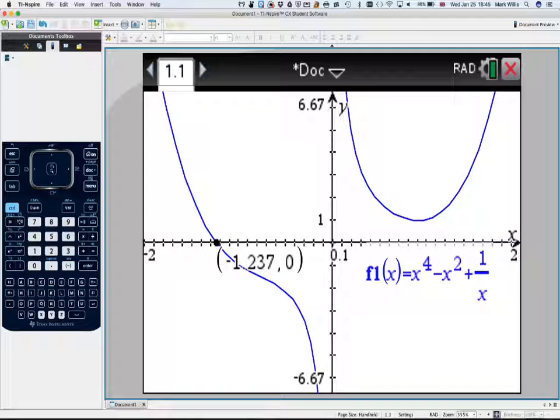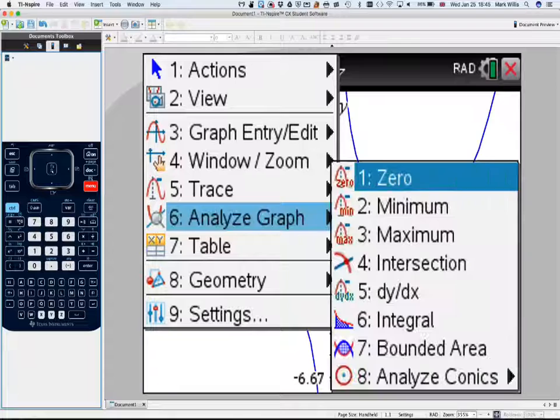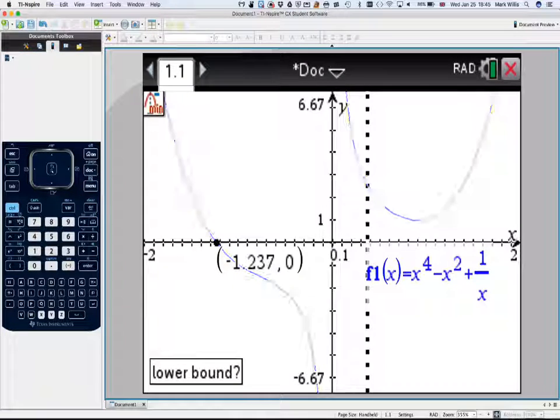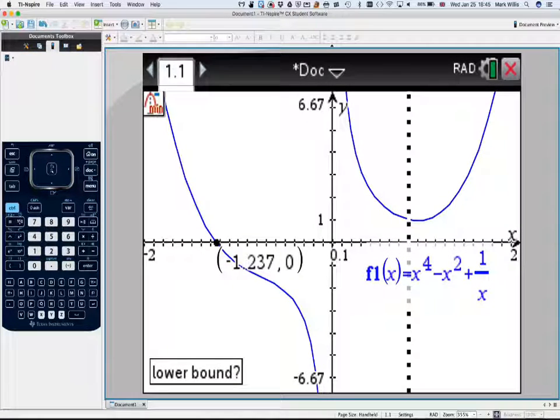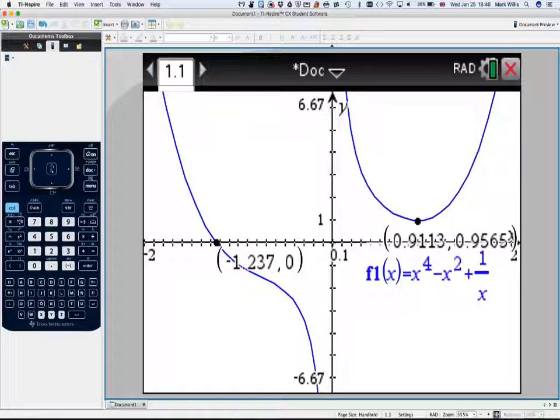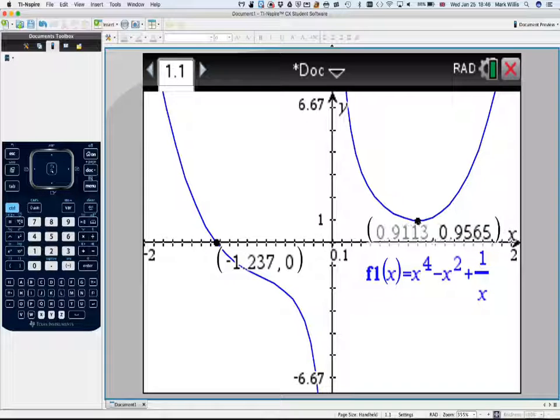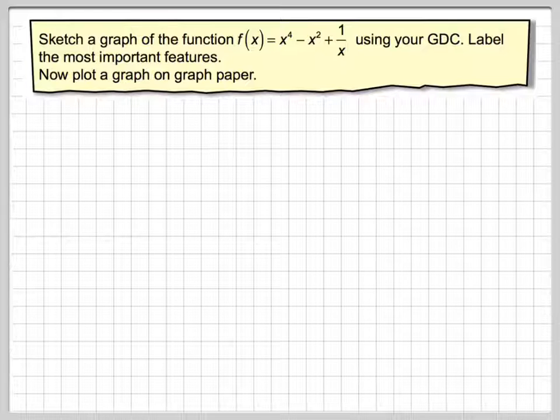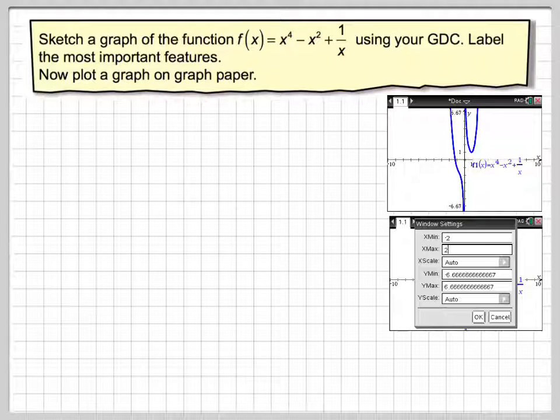Now we're going to find the minimum point here. So we're going to go to menu again, analyze the graph. It's a minimum point. And it's exactly the same thing that we did with the zeros. We go slightly to the left and then to the right. And then we get the coordinates of what we want. I can probably just move that up there a bit better so we can see it. So going back to that, there's some screenshots of what I've just done.